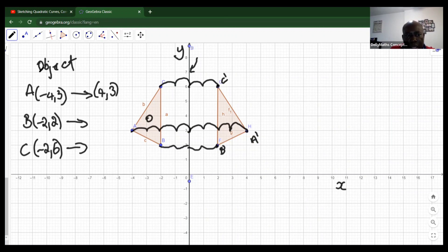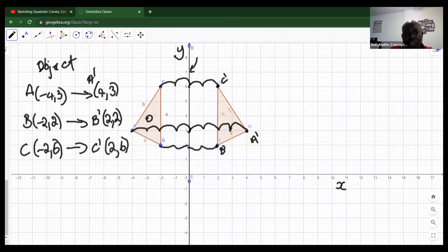Now if you look after the reflection in the y-axis, A prime becomes positive four, three. B prime becomes positive two, two, and C prime becomes positive two, six.